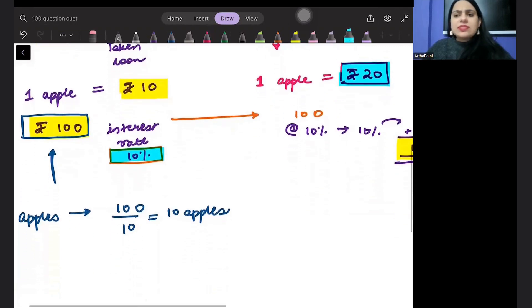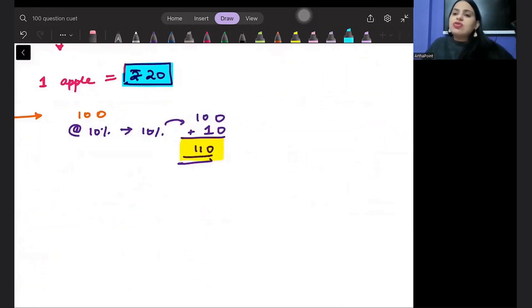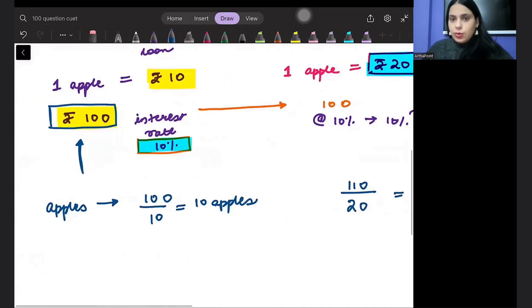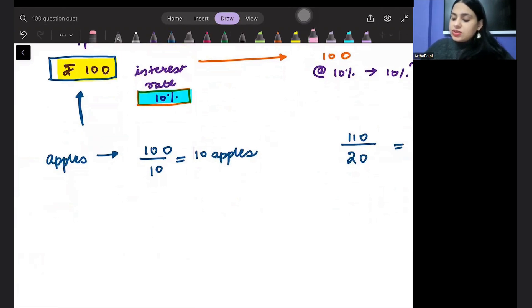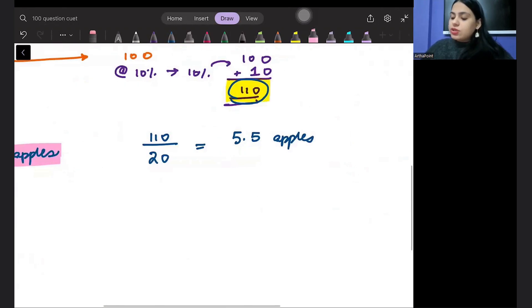So in apple terms, how many apples will you return? If I have to return in apples, how many apples will I have to return? 110 rupees divided by one apple, that means 5.5 apples. Understand, when you took the loan, you could buy 10 apples, but when you had to return, you only had to return 5.5 apples. That means that you benefited from this inflation.